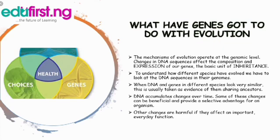Now discussing what genes have to do with evolution — the relationship between genes and evolution — the mechanism of evolution operates at the genomic level. The genome is the complete set of genes or genetic material present in a cell or organism. Changes in DNA sequences affect the composition and expression of our genes, and the basis of our inheritance — any change at all affects it.